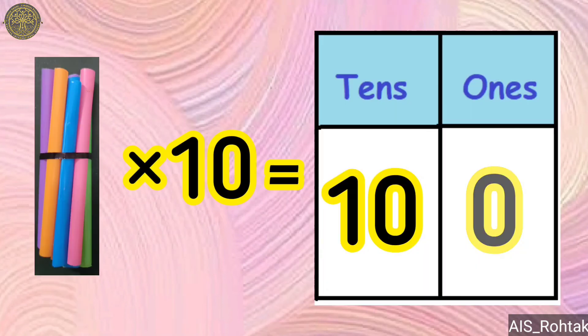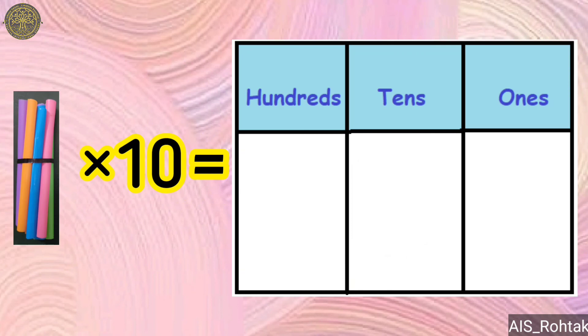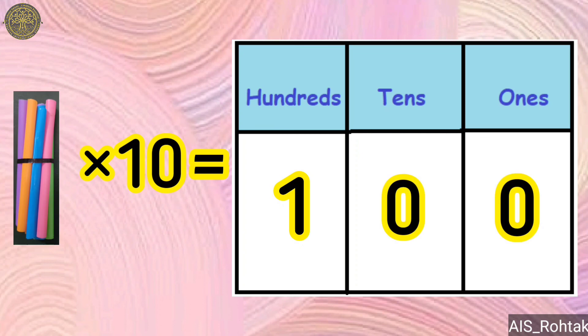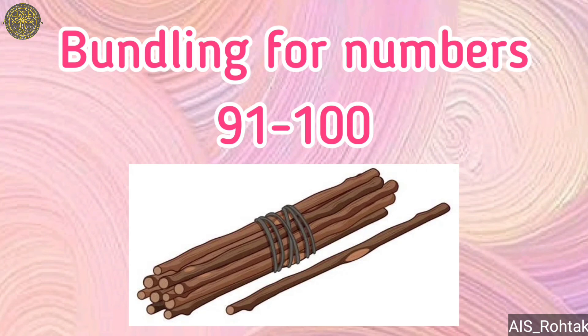Now when we put ten such bundles together, that is equal to ten tens and zero ones. But we will not write ten under the tens column. Instead, we will write one under the hundreds column and zero under the tens and ones column. It means ten tens are equal to one hundred. I hope now you can easily do bundling for numbers 91 to 100.